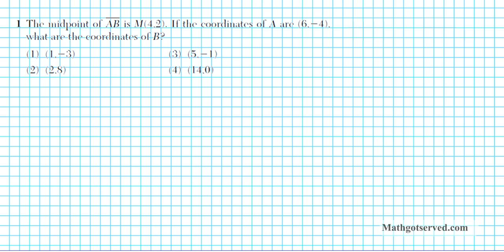Problem 1 says the midpoint of segment AB is M, which has the coordinates (4, 2). If the coordinates of A are 6 and negative 4, what are the coordinates of B? The first thing I'm going to do is write down the formula that connects the three coordinates we're dealing with, set up an equation, and solve for the coordinates of B.